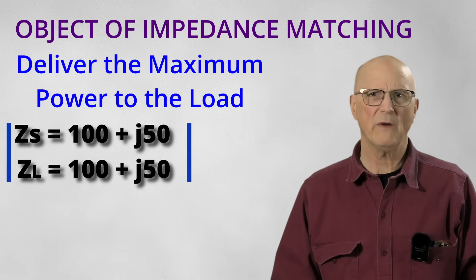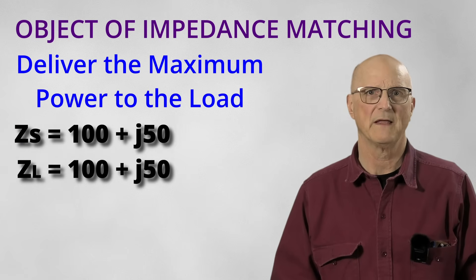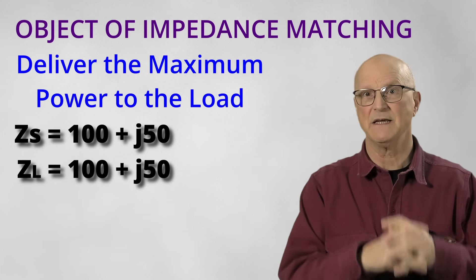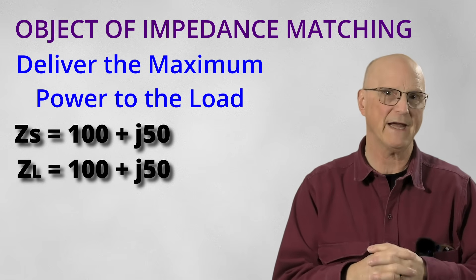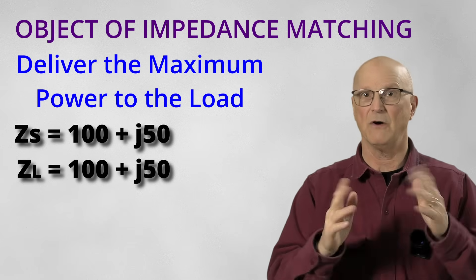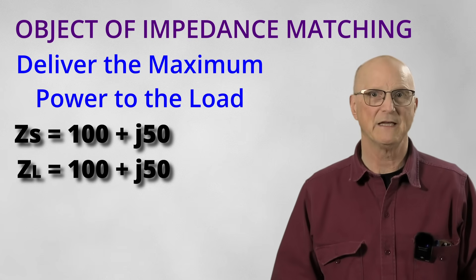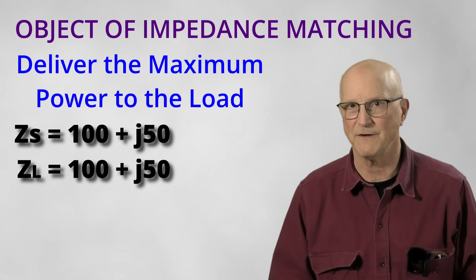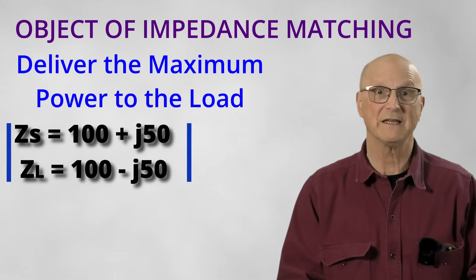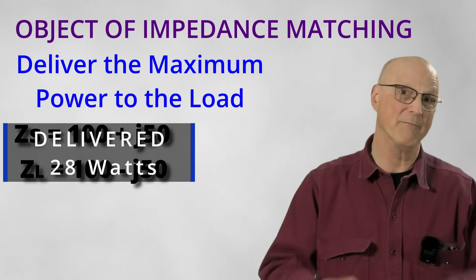With this configuration, we would deliver 22.4 watts to the load. The complex conjugate of the complex impedance is found simply by changing the sign of the reactive part from positive to negative or vice versa. So the complex conjugate of our 100 plus J50 is 100 minus J50. So what happens if we use this as our load? We deliver 28 watts to the load. This is a full 25% more power.